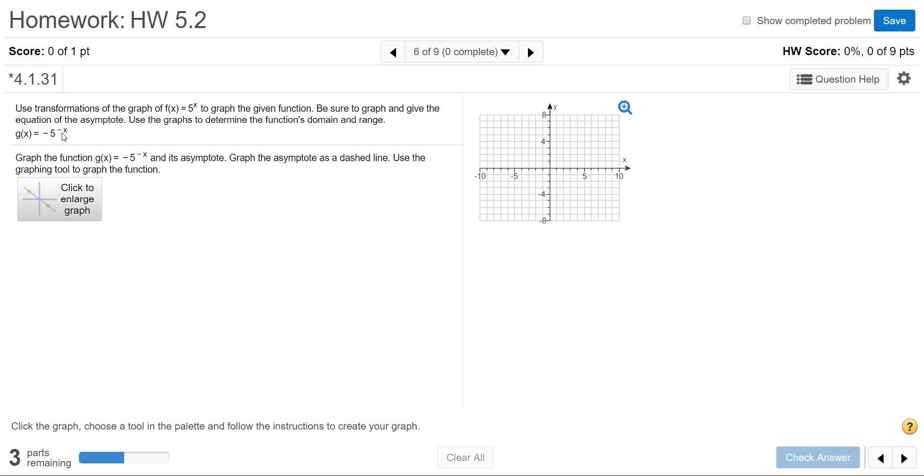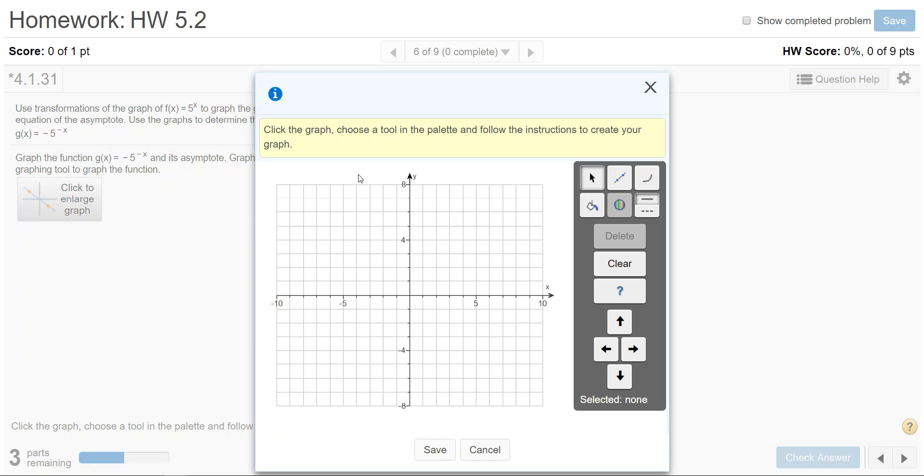I'm going to click to enlarge the graphing tools. I'm going to graph the horizontal asymptote first. The asymptote is y equals zero. This graph is not moving up or down or left or right so the asymptote is staying at y equals zero.